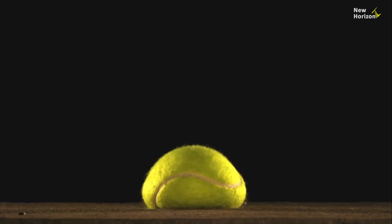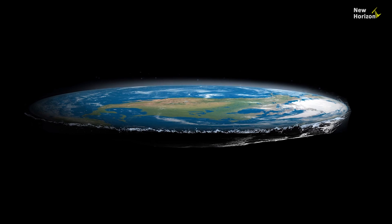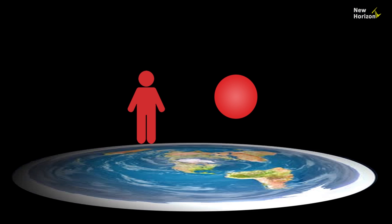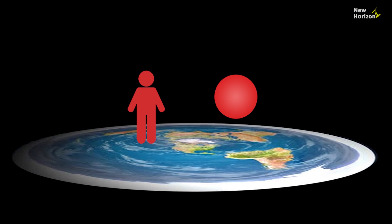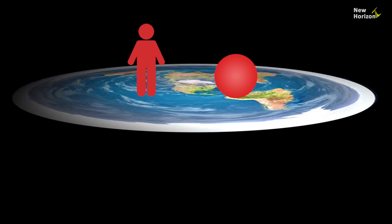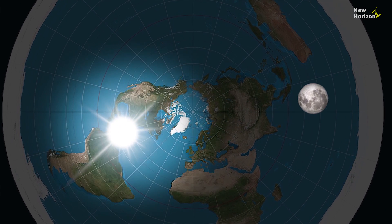For some flat earthers, gravity is a hoax. If they do believe in gravity, it makes it harder to prove that the Earth is flat. There is much controversy about gravity among flat earthers — some argue that objects fall because the Earth is constantly accelerating upward, which doesn't quite fit with their theory that the Earth is stationary.